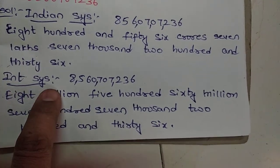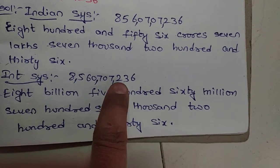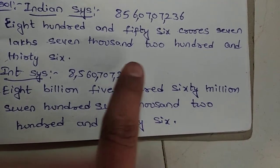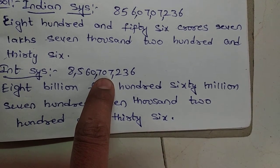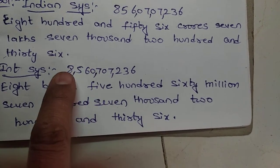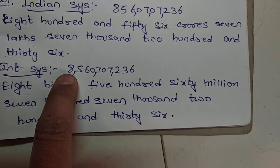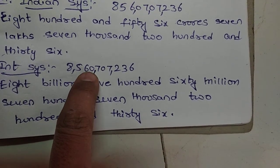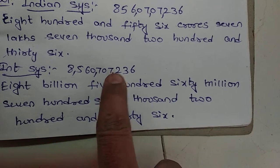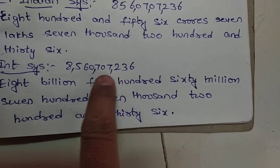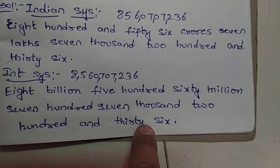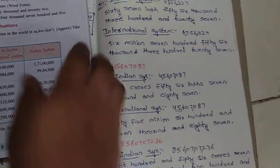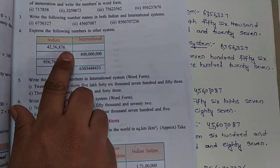In the International system, each period has three place values. The periods are: units period, thousands period, millions period, and billions period. The number name is: eight billion, five hundred and sixty million, seven hundred and seven thousand, two hundred and thirty-six. That completes the three problems in the third exercise.